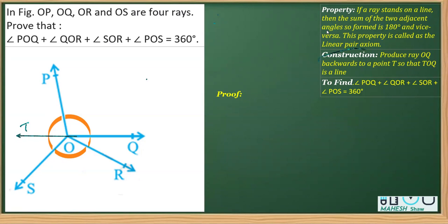So you can write this construction, and it is important that you must mention the construction: produce ray OQ backwards to a point T. Clearly, whenever you produce a ray backward, it becomes a straight line.